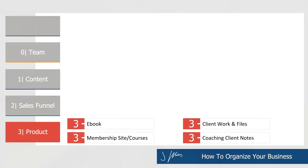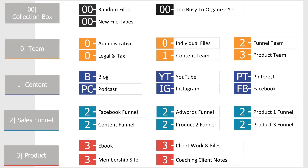The final quadrant is product. This is where you're either going to store your client files if you're a services-based business — like we do for our agency — or you're going to store all your digital products like eBooks, course files, and coaching student notes. For example, I call this folder 'product' for myself, but in our agency team drive we call it 'clients' because that's where all of our client work goes.